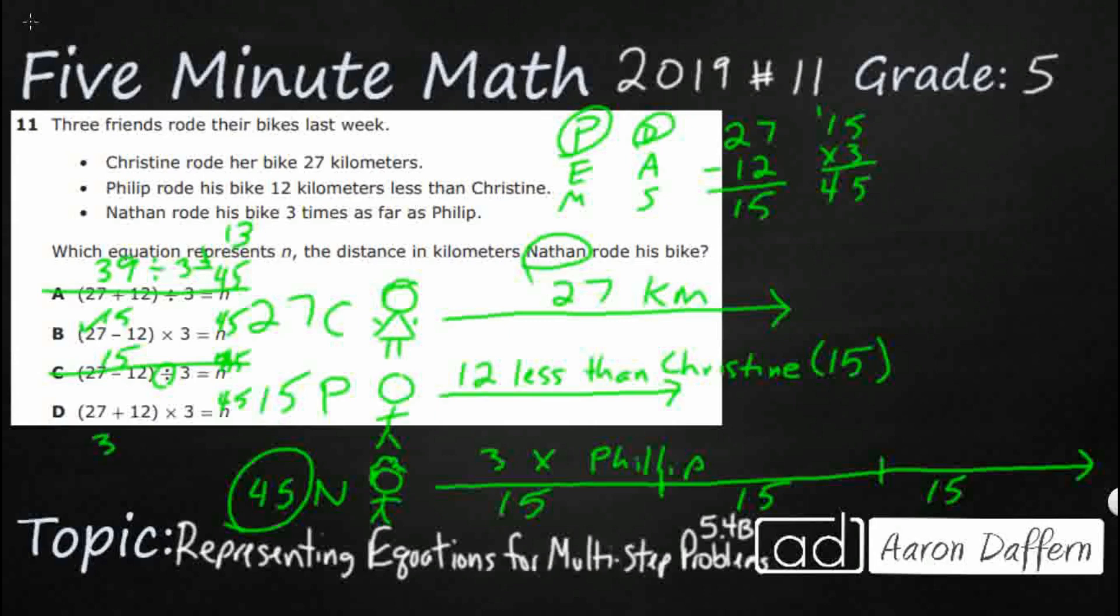D, we are adding again, that is going to get you 39 times 3, times 3, that is 117, the times 3 is right, but adding is incorrect, our answer is B.